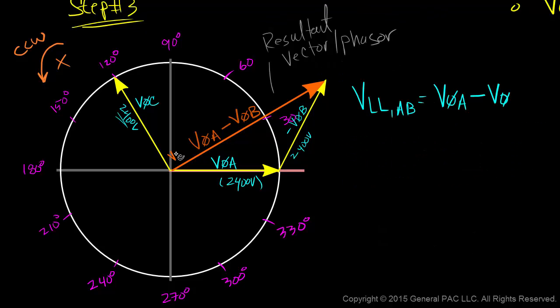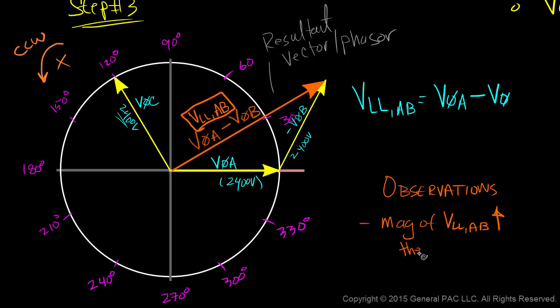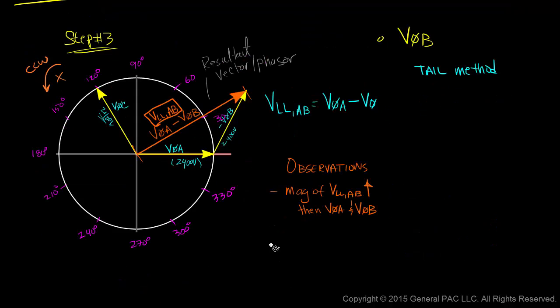Let's make some observations about our phasor diagram. The magnitude of VLLAB is larger than phase A voltage. It's also larger than phase B voltage. The angle of VLLAB is not the same as phase A voltage or phase B voltage.